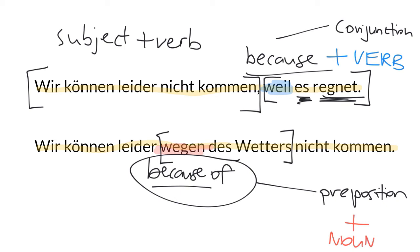So when you see because of, you're going to see a noun straight after it. Notice there's no comma because there's no second clause. There's only one clause here.